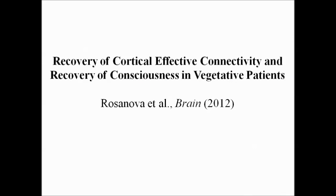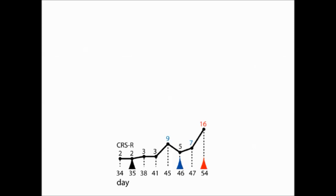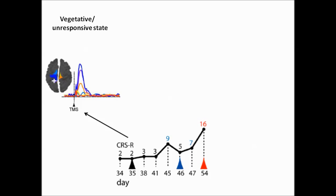This graph represents the clinical evolution as assessed with the coma recovery scale revised, CRSR — the higher the score, the higher the level of consciousness. 35 days after the brain injury, when the patient was in a vegetative state or unresponsive wakefulness syndrome, TMS triggered a simple slow wave response in the brain that stayed local, near the site of stimulation — here represented with the white cross — and each color represents an area of the brain. This first result indicates a breakdown of effective connectivity, similar to what was previously observed in unconscious sleeping or anesthetized subjects.